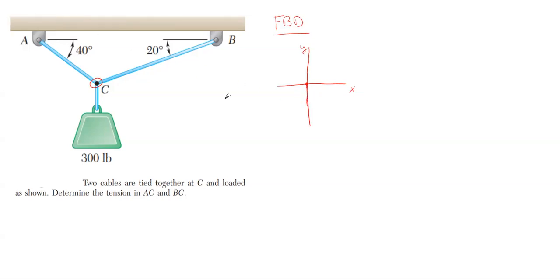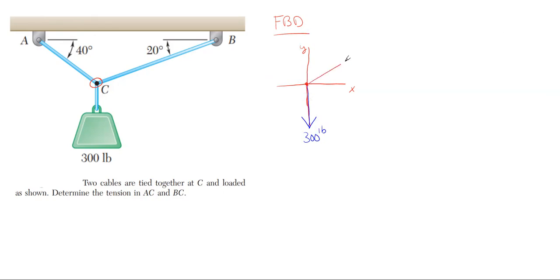We're going to apply this weight of 300 pounds going in a downward direction because that's how gravity works. Then we're going to have our AC and BC cables here. Force BC for cable BC and force AC for cable AC. These two cables have to be in tension - if the 300-pound force is pulling downward, the cables will snap back to their original position, so they will have forces going in the upward direction. We also need the angles of each of these forces for AC and BC.